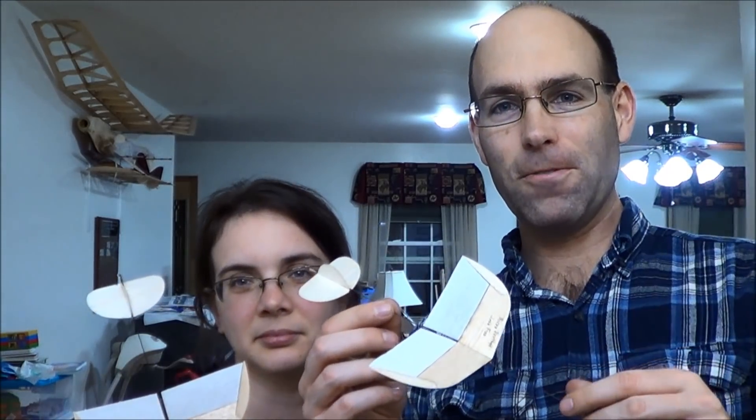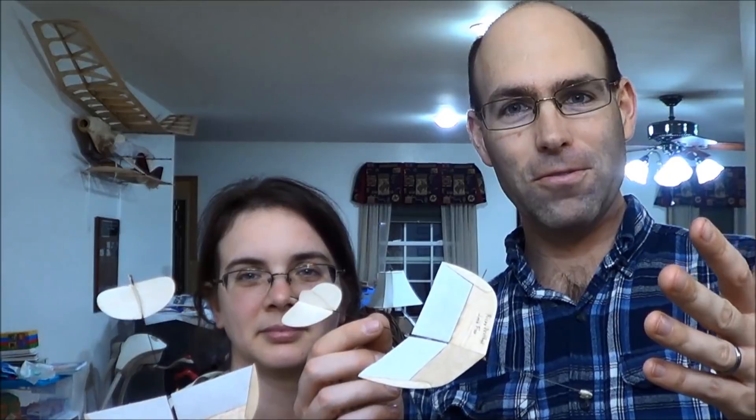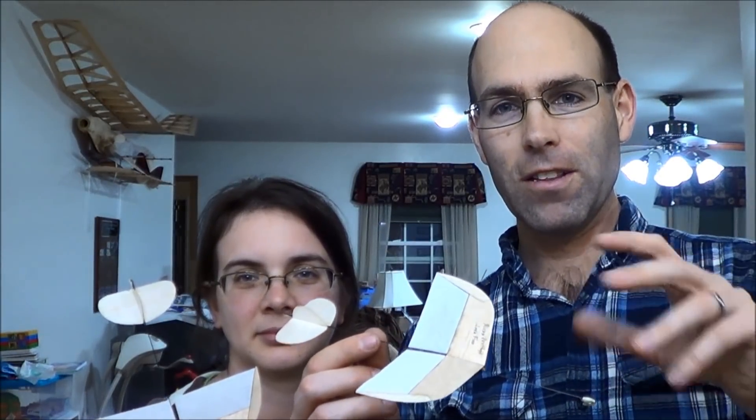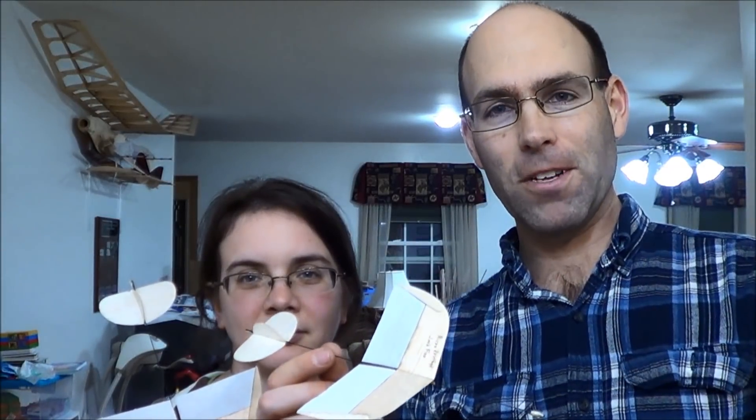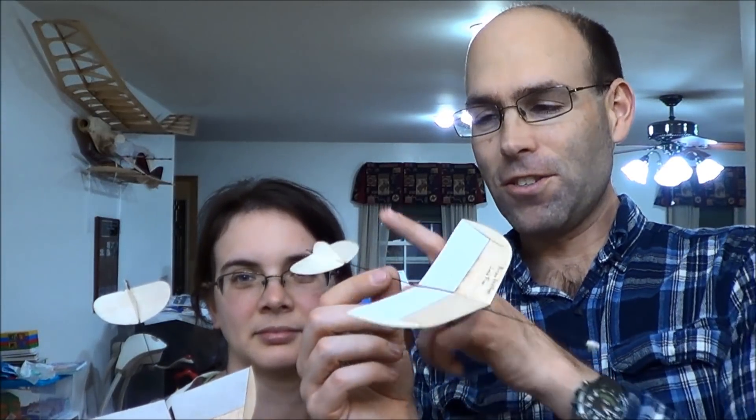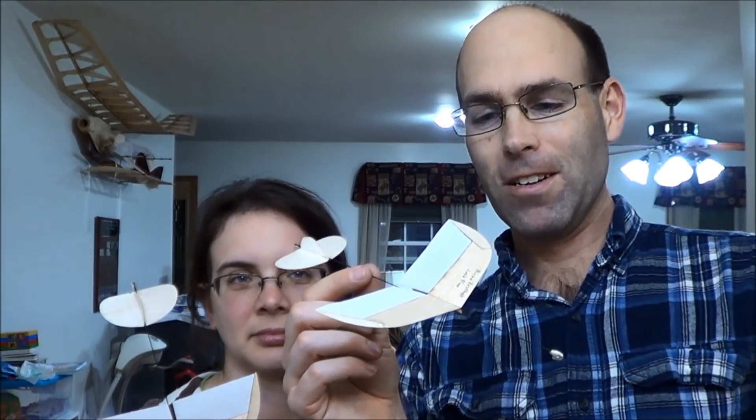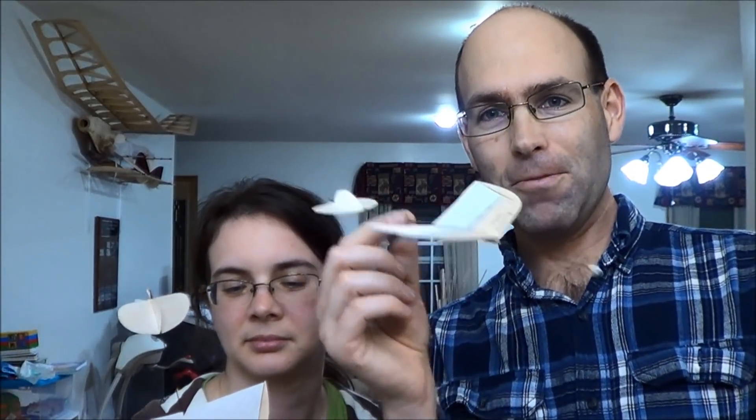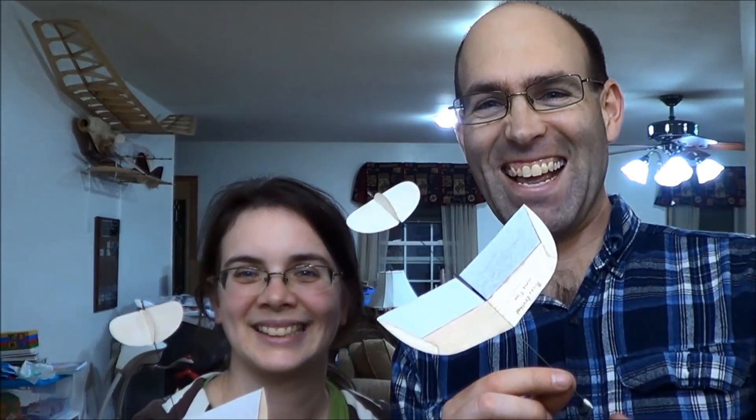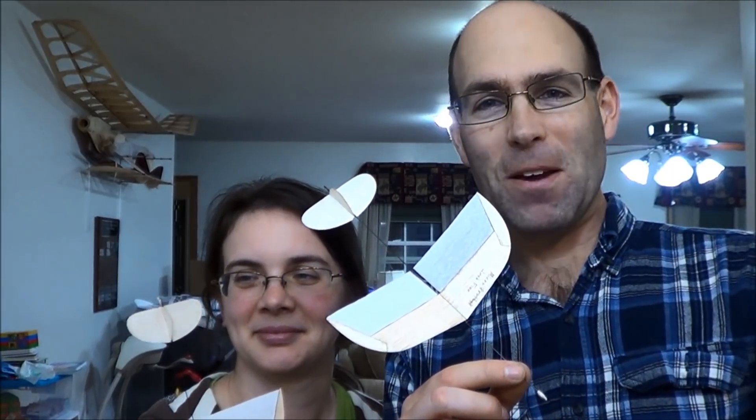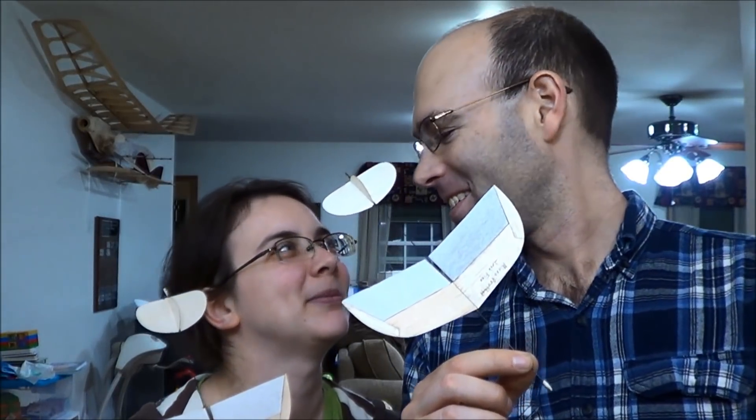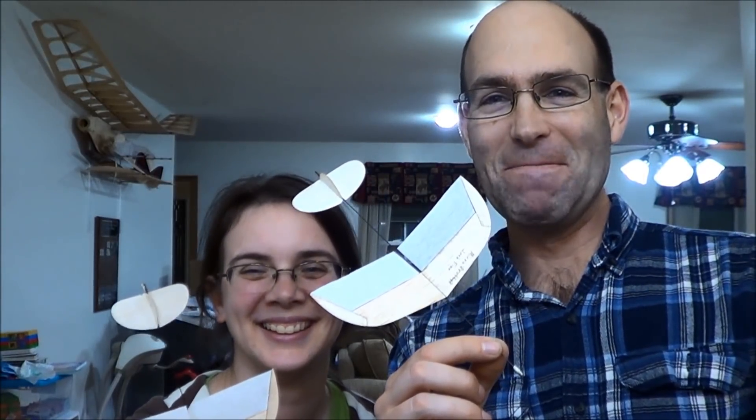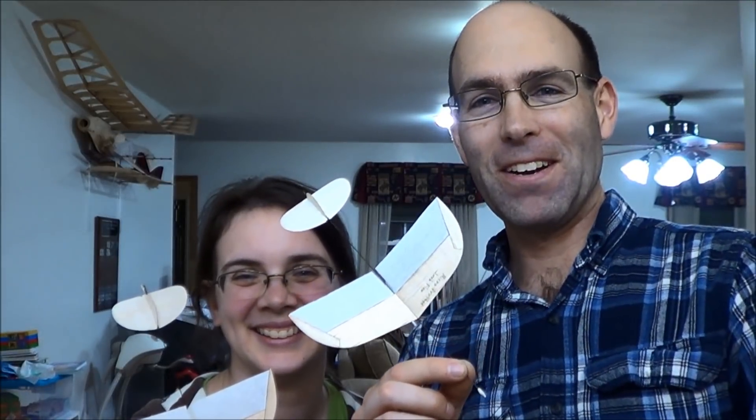Anyway, this is the build video for the kit version. It also will serve, if you're unfamiliar with how the build sequence goes, if you're building from the free plans from our website, just use 1/64th balsa back here. Or sand down some 1/32nd really thin, because you can do that, too. Anyway, with that... Hope's not even looking at the camera. Sorry, I couldn't resist. I'm admiring my plane. Yes, you are. It flies very nicely. Anyway, we'll commence with the build video.